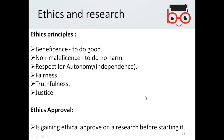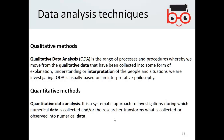Approved ethics means gaining ethical approval on a research before starting it. For example, if you are doing any research on a particular person, you should have approval from that person whether they are okay to allow you to research on them, their property, or their assets.